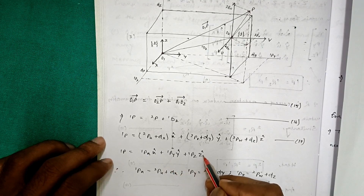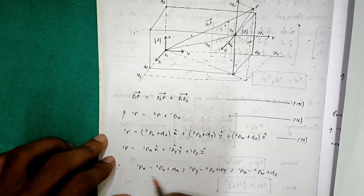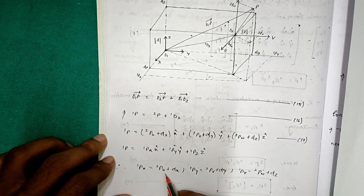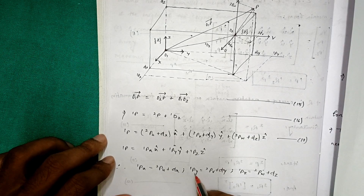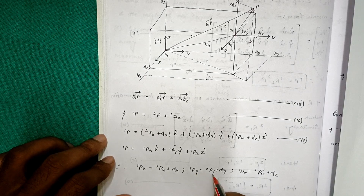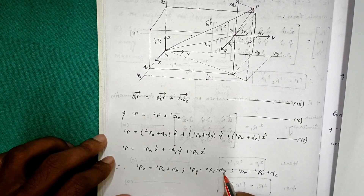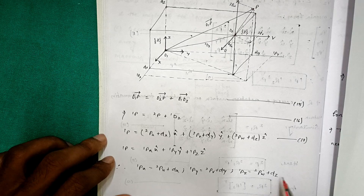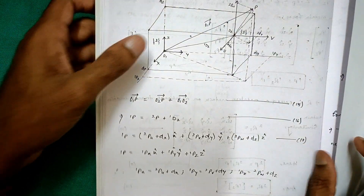From this relationship we get the component equations: 1px is equal to 2pu plus dx; 1py is equal to 2pv plus dy; 1pz is equal to 2pw plus dz.